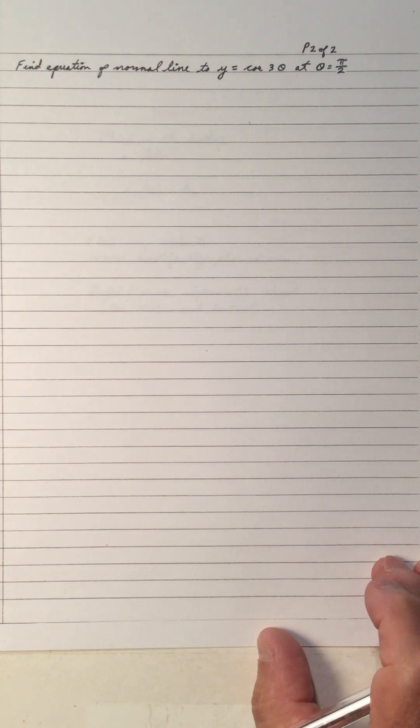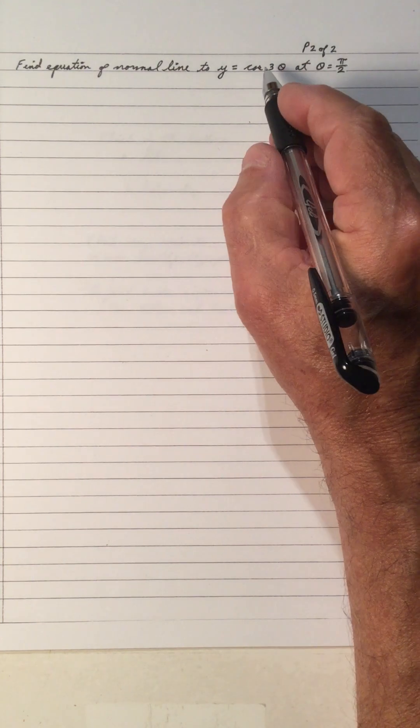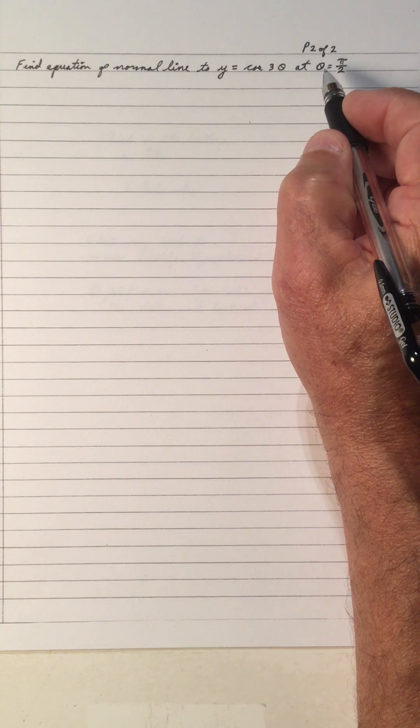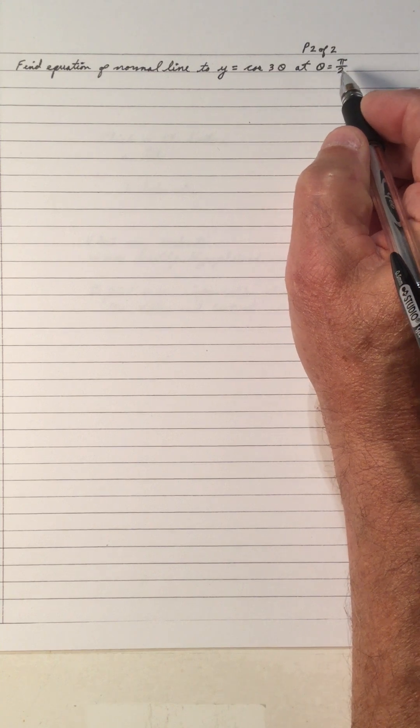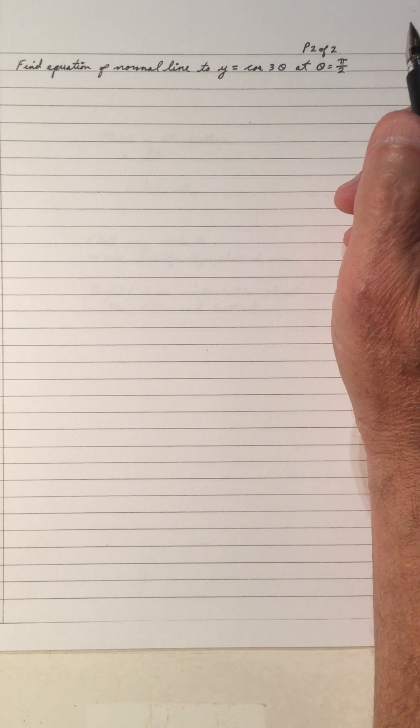Hi, welcome to my video on finding the equation of a normal line to a curve, number 2. Find the equation of a normal line to y equals cos 3 theta at theta equals pi over 2.